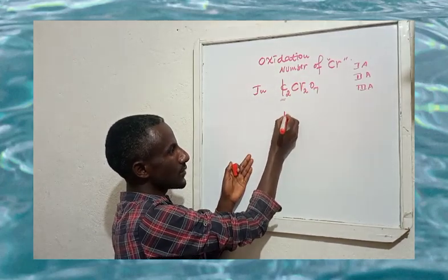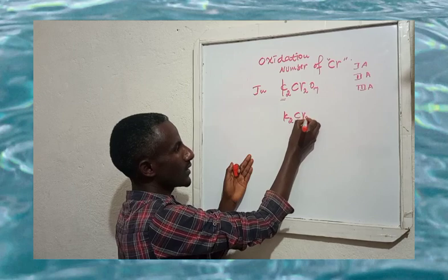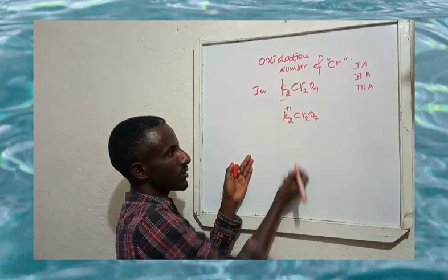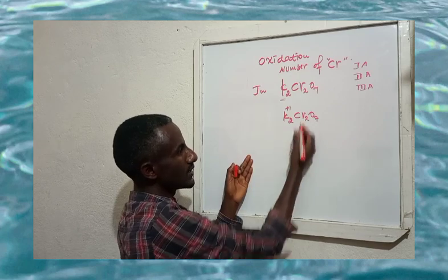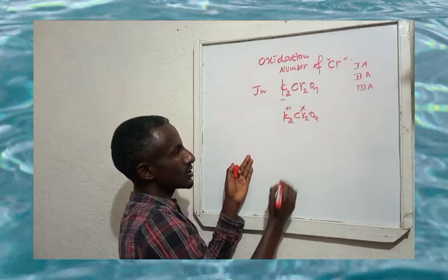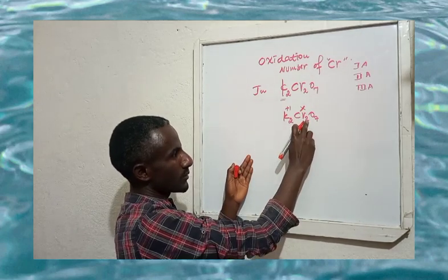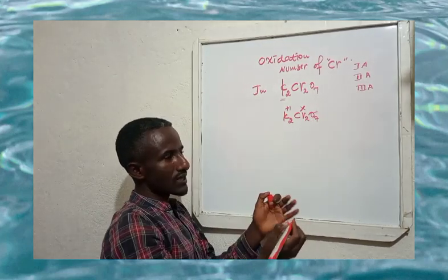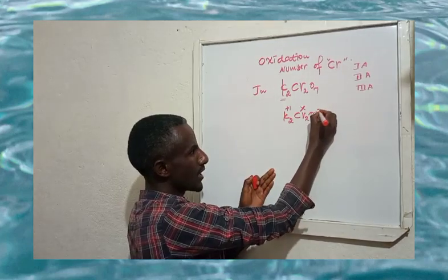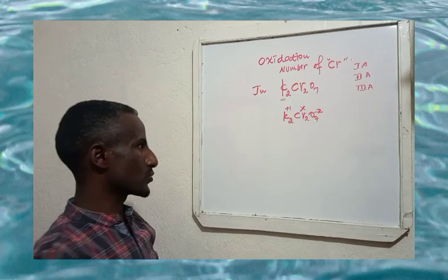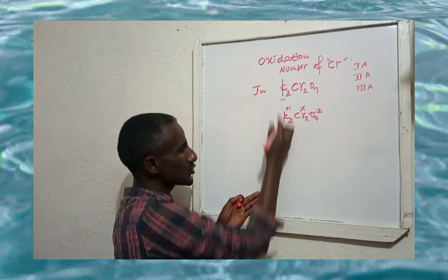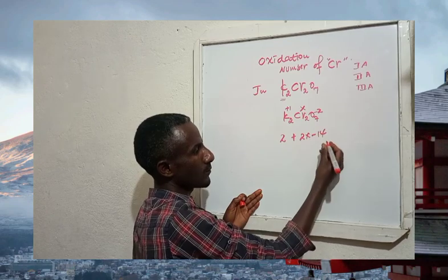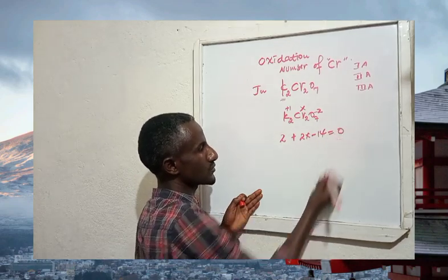In potassium dichromate, potassium has plus one because it is a group one metal. Let chromium's oxidation number be x, so we have two times x for chromium and seven times minus two for oxygen. The equation is: 2(+1) + 2x + 7(-2) = 0, which gives 2 + 2x - 14 = 0.